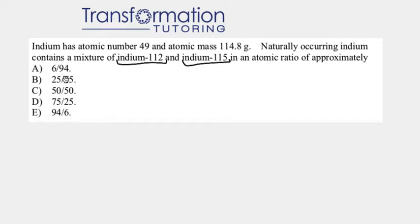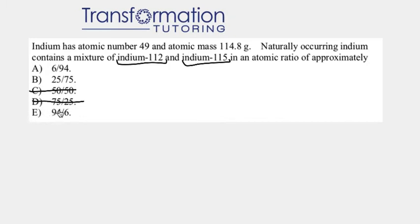Looking at our answer choices, we can start to eliminate some. Choice C says 50-50 percent — if it were 50-50, the average would be halfway between 112 and 115, but our mass is very close to 115, so we can eliminate C. We can also eliminate D because in D, indium-112 would be much more abundant, and that is not the case. We can eliminate E as well because in E, indium-112 is more abundant at 94 percent to six percent, but we know indium-115 must dominate.